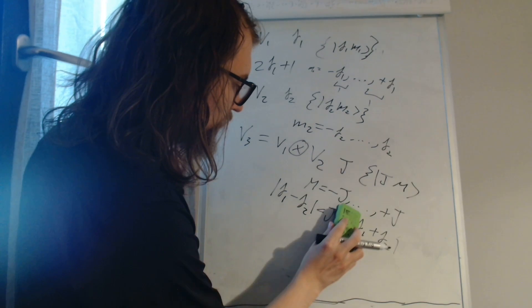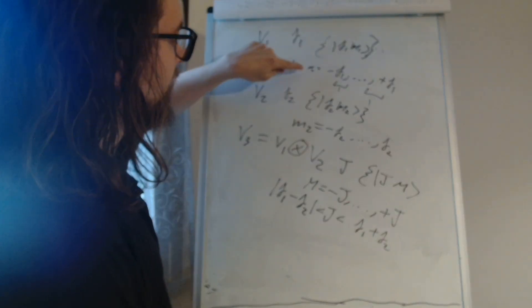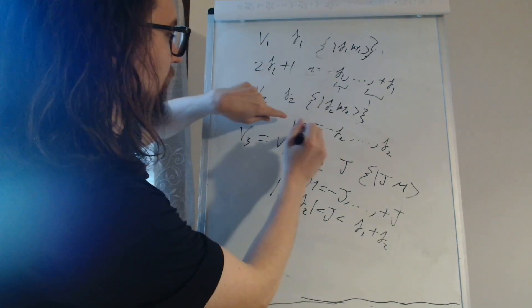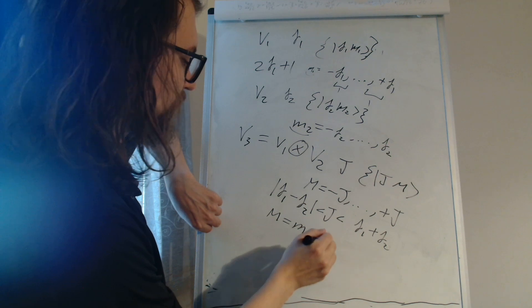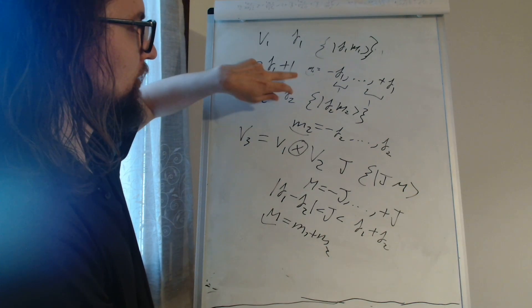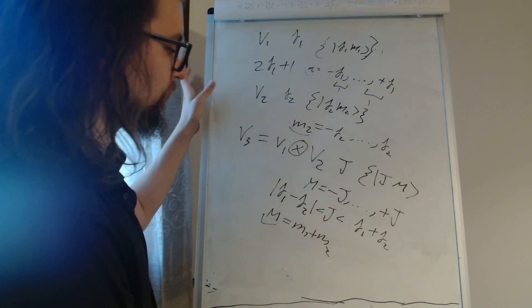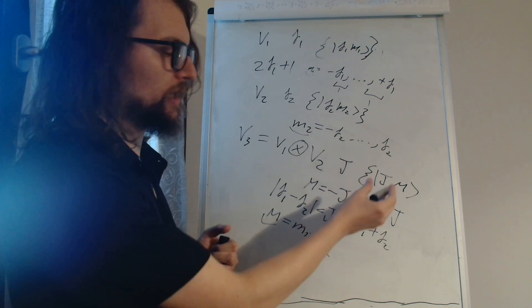We don't need the absolute value here because they are positive numbers. If we have M1 here and M2 here, M will be exactly the sum M1 plus M2. So this number M is completely determined by M1 and M2.